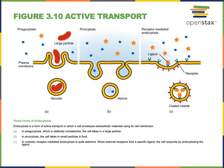Receptor-mediated endocytosis is a specific interaction where a chemical substance in the extracellular environment, known as the ligand, binds to a protein embedded in the plasma membrane, known as the receptor. The ligand-receptor binding is very specific, so that a receptor recognizes one specific ligand and not a different protein or other solute in the extracellular environment. This specificity allows the cell to regulate what enters from the extracellular environment, only allowing this ligand in when needed.